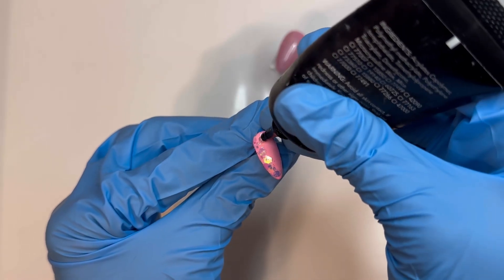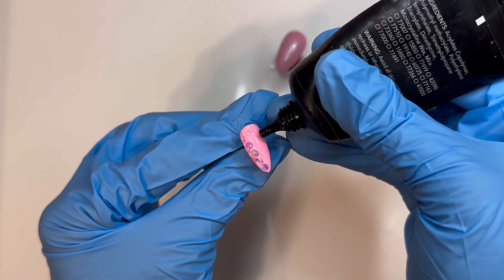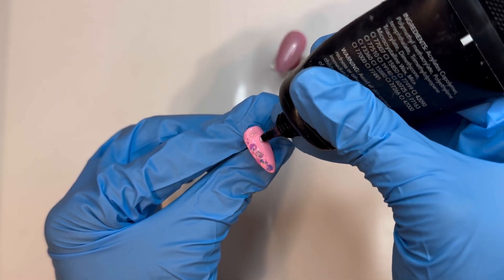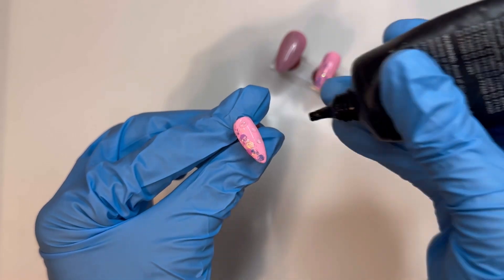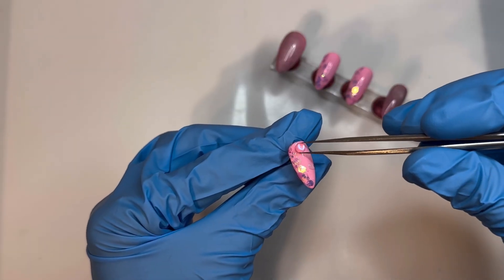I've got these clear droplet pieces and I'm just going to be taking three of these and putting them onto the pinky nail. I'm going to have the biggest one at the top and then curve it down to where it's gradually getting smaller.